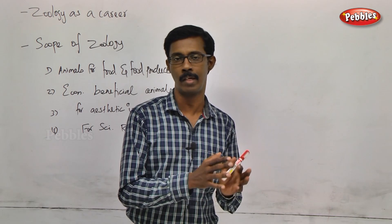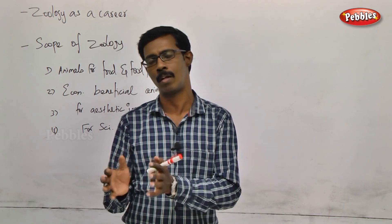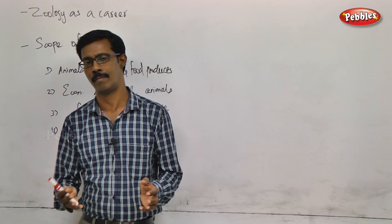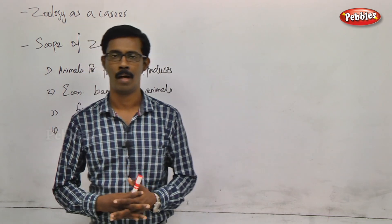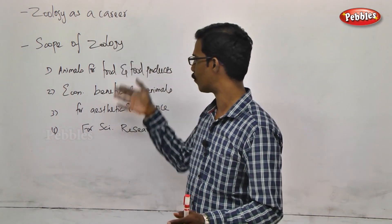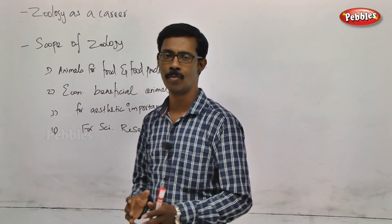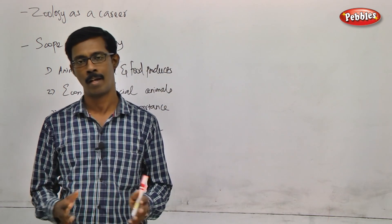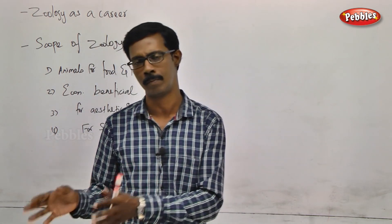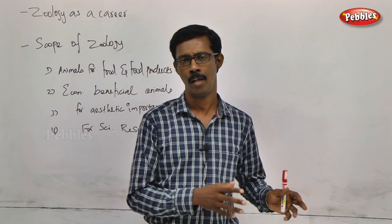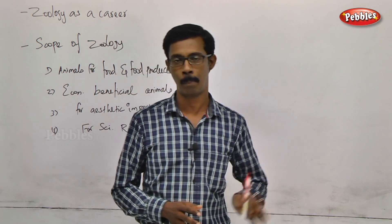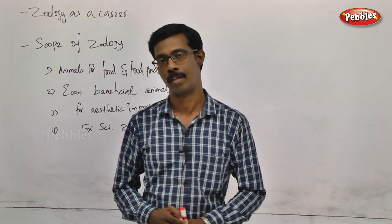In animal study, we can use animals for drug purposes. This is a general outline of the scope of zoology. In this entire chapter, we will discuss the field of vermiculture, sericulture, lac culture, aquaculture, aquaponics, and animal husbandry.